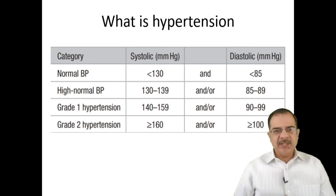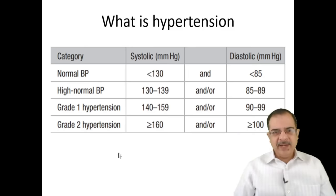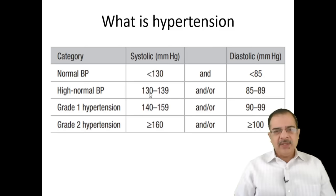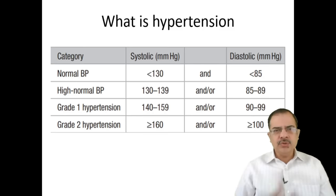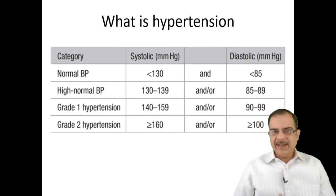To classify a patient, use the 'and/or' rule — whichever value is higher determines the grade. For example, a patient with BP 130/100 is classified as Grade 2 because the diastolic of 100 falls in Grade 2, even though the systolic of 130 is in the high normal range. Indian guidelines also classify Grade 3 hypertension as systolic greater than 180 and/or diastolic greater than 120.